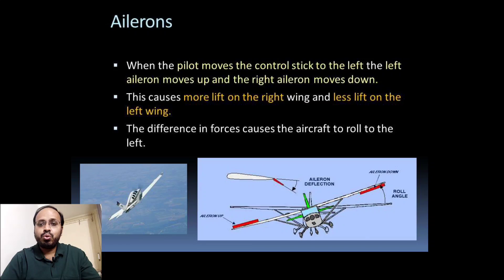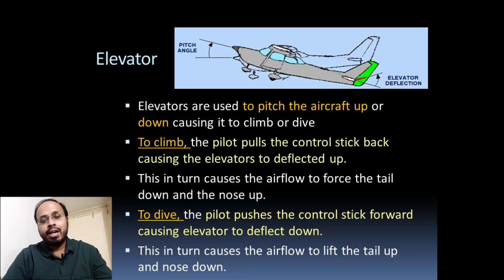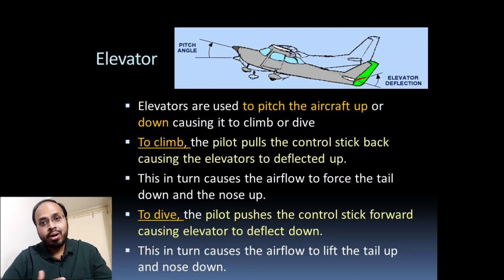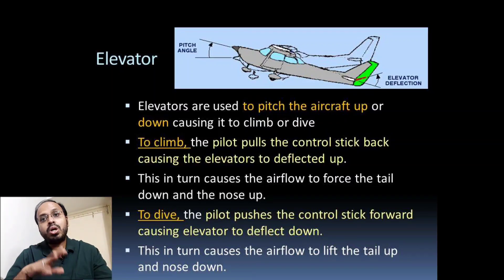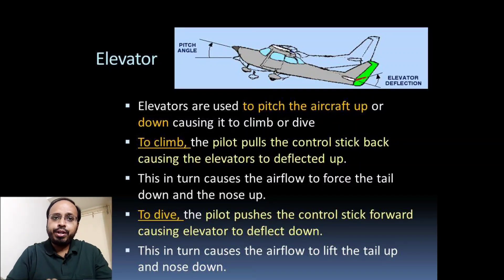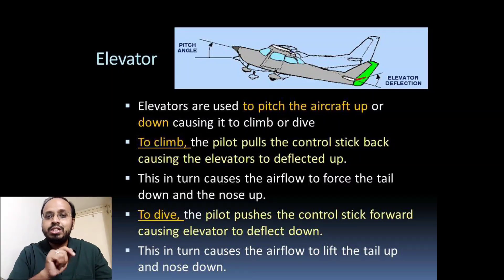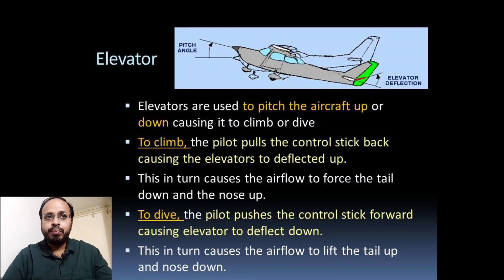Elevators are used to pitch the aircraft up or down, causing climb or dive. To climb, the pilot pulls the control stick back, causing the elevator to deflect up — this forces the tail down and nose up. To dive, the pilot pushes the control stick forward, causing the elevator to deflect down — this lifts the tail and brings the nose down. This is the simple operation the pilot performs during pitching control of the aircraft.